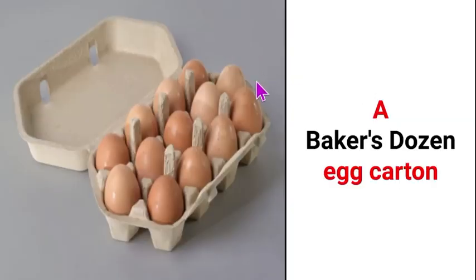Now, look at this picture. 1 dozen mein toh 12 hote hain. Kya aapko pata hain baker's dozen mein kitne pieces aate hain kisi cheez ke? This is a baker's dozen egg carton. Is mein kitne unde hain? Aap ye gin ke mujhe comment section mein bata hain. Is wale egg carton mein kitne unde hain?